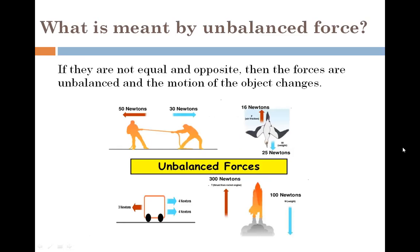What is an unbalanced force? If the forces are not equal and opposite, then the forces are unbalanced. For example, in a tug-of-war, both men are pulling a rope. If one man applies 50 Newtons and the other applies 30 Newtons, the force is greater on one side — that is an unbalanced force. Similarly, in the case of a space shuttle, a rolling body carrying weight, or birds flying through air, there is air resistance acting on them.